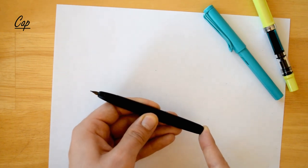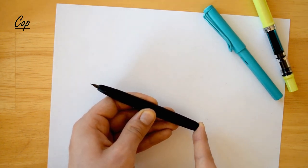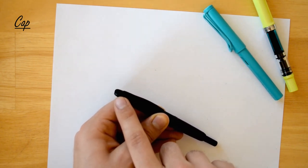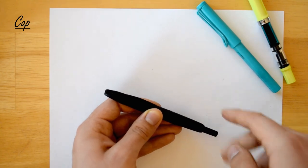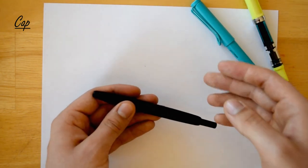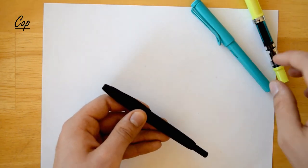To open it, you push onto this button, this deploys the nib, and to retract it you do the same thing again. There's a small hinged door in the front of the pen that opens and closes with the nib and it allows the ink to remain moist at all times, but it doesn't have a cap.